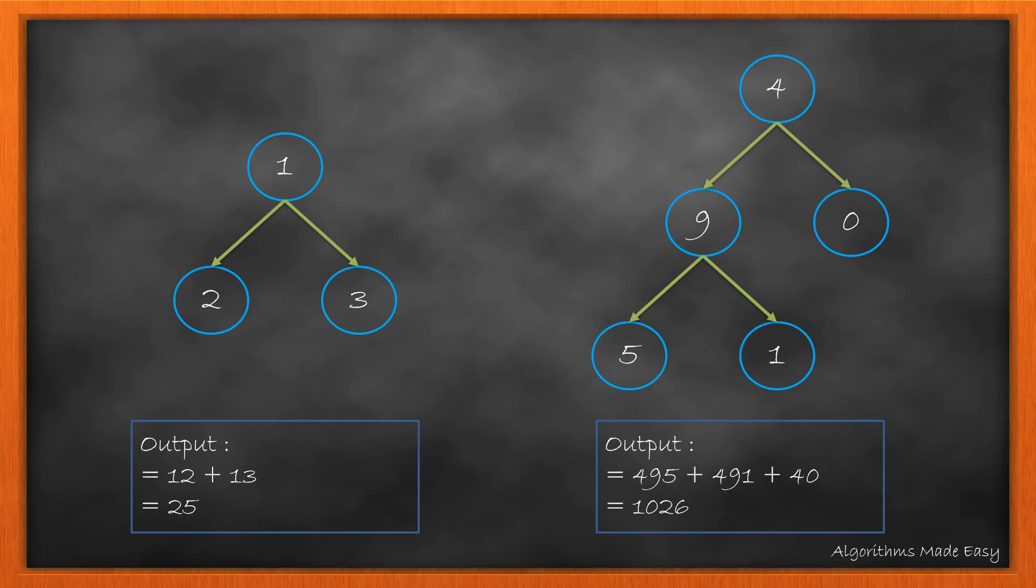In the given first tree, the sum is 12 plus 13, which is 25. In the second tree, the total is 1026.